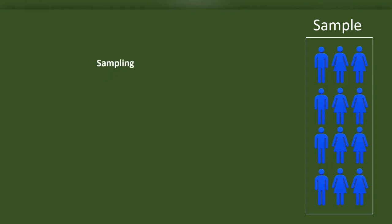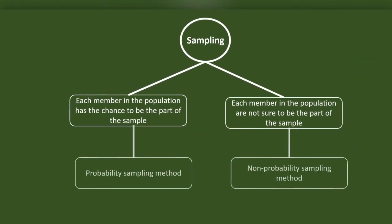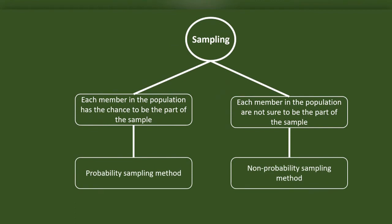Sampling can be classified into two based on its representativeness of the population. Representativeness is assumed to be high if each member in the population has the chance or probability to be part of the sample. If the sampling method ascertains this probability, we can call it a probability sampling method. If the sampling method does not guarantee the probability, then we call it a non-probability sampling method.